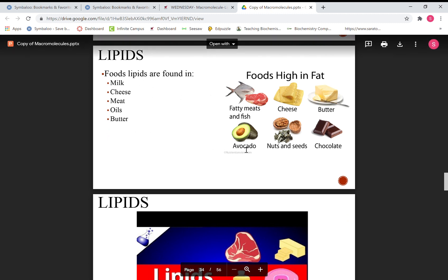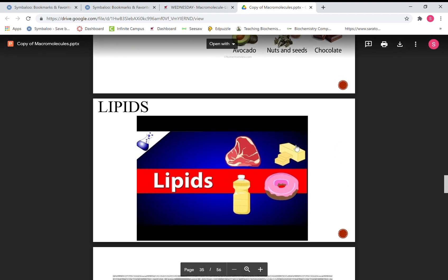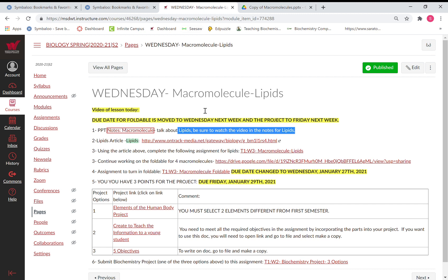So here are some of the foods: milk, cheese, meat, oil, butter, avocados, nuts, and seeds. Here is a video to watch in addition to the video I've just shared with you.